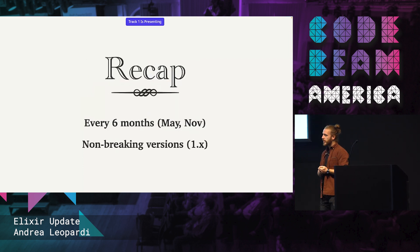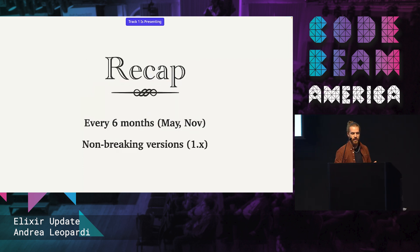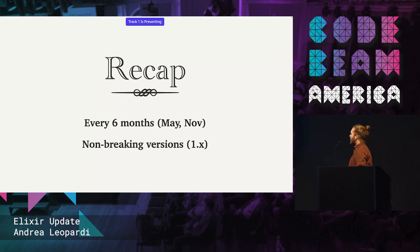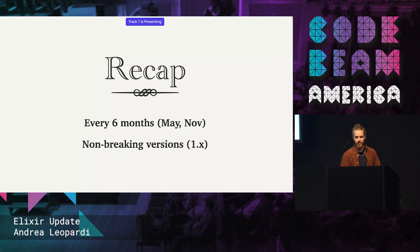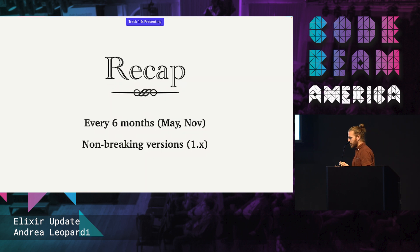A recap of Elixir releases — we release every six months, roughly, when we manage to do it. We always release non-breaking versions, meaning that using semantic versioning, we always stay on the one major version. We release minor versions, so we're backwards compatible with code.